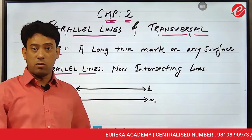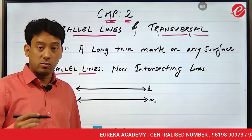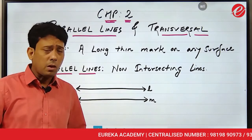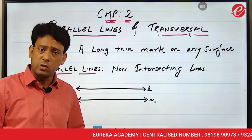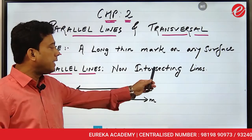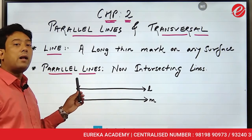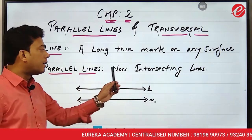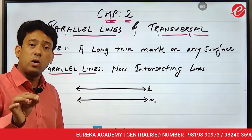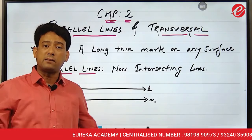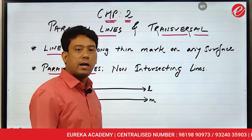Any surface. Now come to the main topic, that is parallel lines. The definition of parallel lines ends in three words: non-intersecting lines. What are parallel lines? Non-intersecting lines — meaning lines that never intersect each other. Those are called parallel lines.